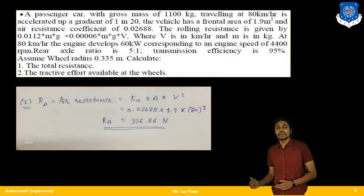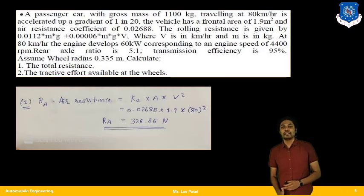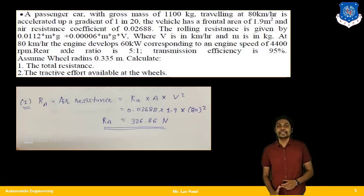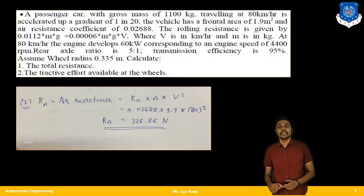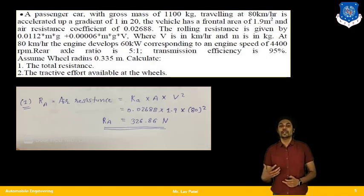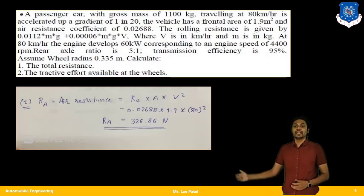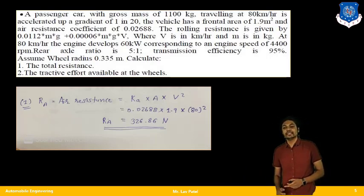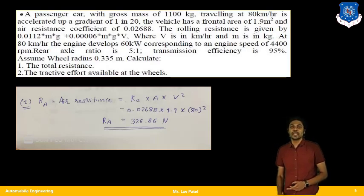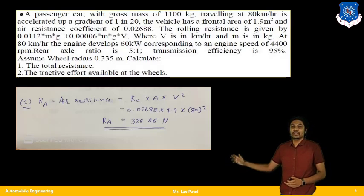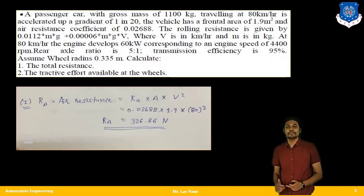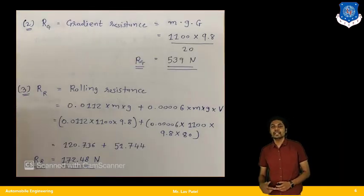Let us begin with the first resistance — air resistance Ra. The formula for air resistance is Ra = Cd × A × V². Here Cd = 0.02688, frontal area A = 1.9 m², and velocity V = 80 km/h. After solving, we get Ra = 326.86 N. That is our first result.